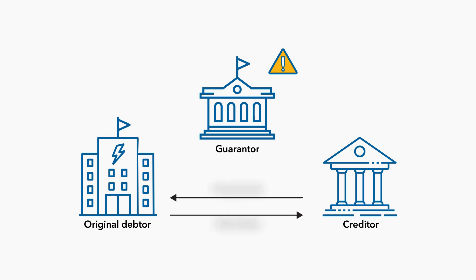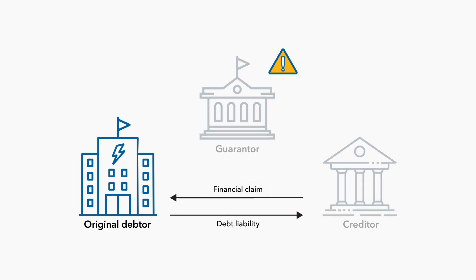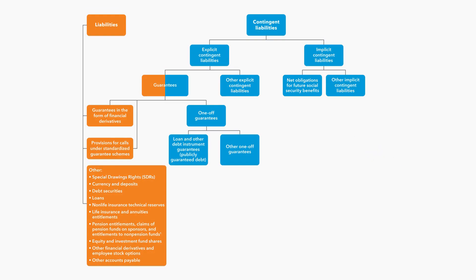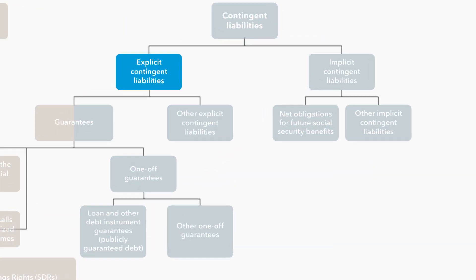Contingent liabilities are obligations that do not arise unless and until a particular discrete event occurs in the future. In other words, they are potential fiscal risks for a public sector unit. These liabilities remain on the balance sheet of the original debtor, not the guarantor's balance sheet, unless and until a specific event takes place in the future. We distinguish between explicit and implicit contingent liabilities.